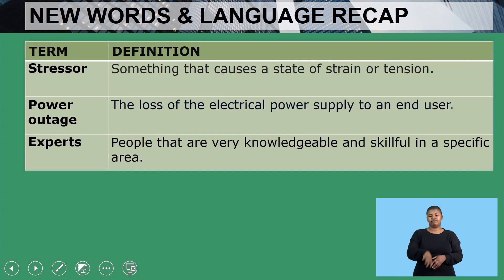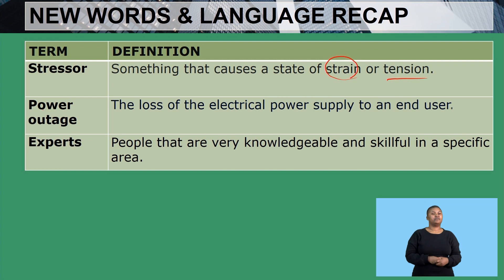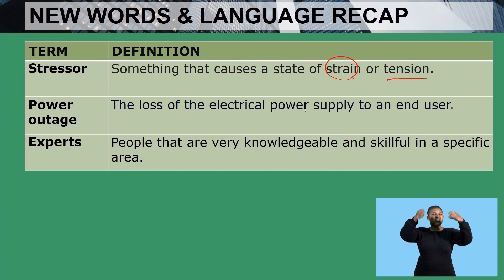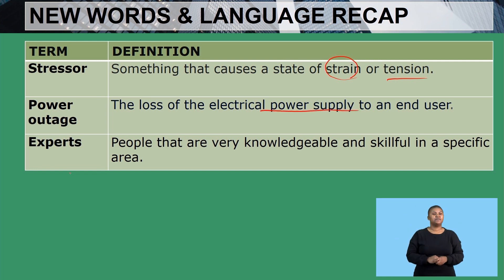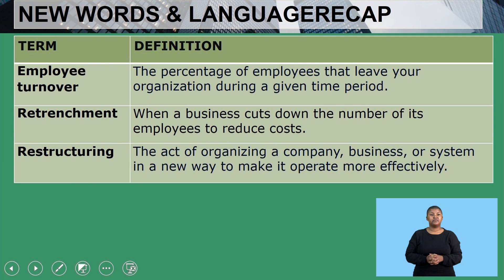We then have the word 'stressor,' which is something that causes a state of strain or tension. We have 'power outage,' which is the loss of electrical power or supply to an end user. And then we have the word 'experts,' who are people that are very knowledgeable and skillful in a specific area.